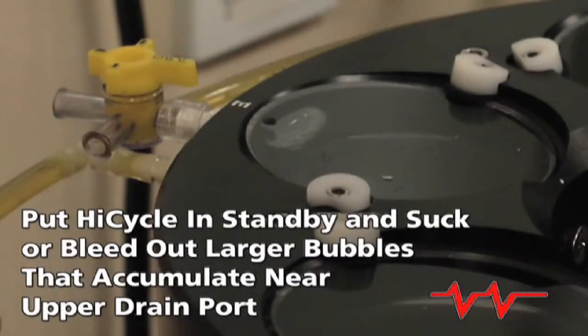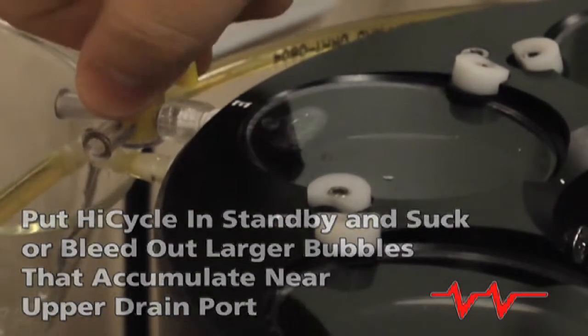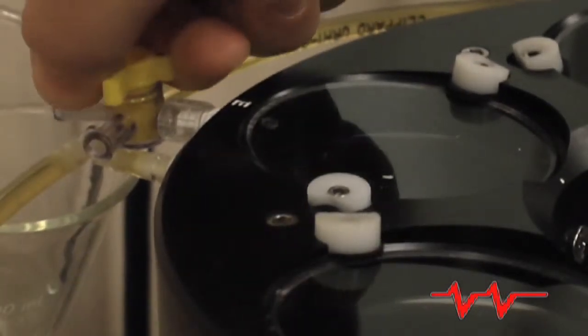When the HiCycle is in standby, larger bubbles tend to accumulate near the top drain port. This air can be sucked out with a syringe or just bled out using the pressure of the static head.